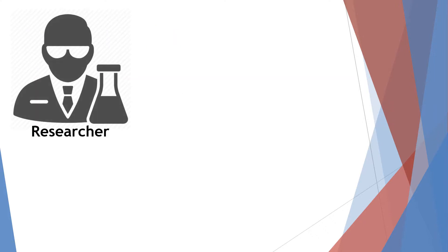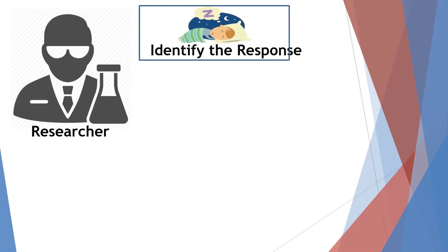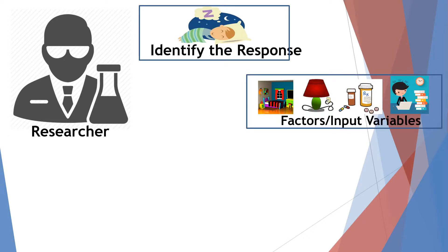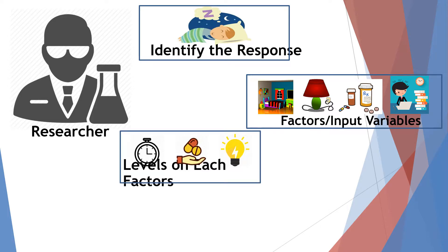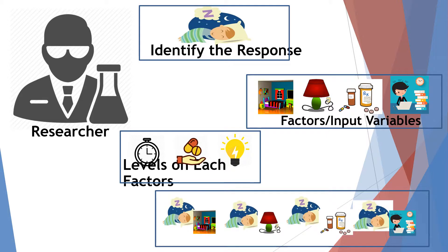As a researcher, we must first identify the response of the experiment — in our example, the response is sleep quality. Second, we identify the input variables or factors, which in our experiment are sleeping environment, room lighting, work shift, and medication. Third, we set the level on each factor — level is like setting the range of the possible values you will use in each variable. And lastly, we vary and observe the effect of each input factor on the output response individually.